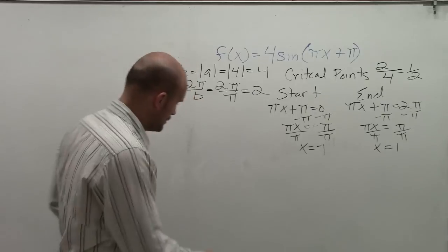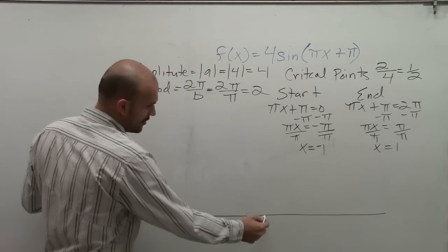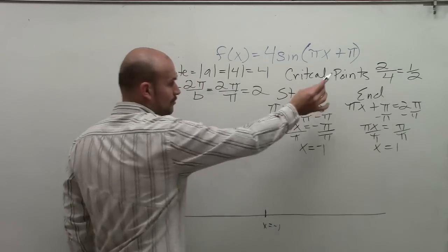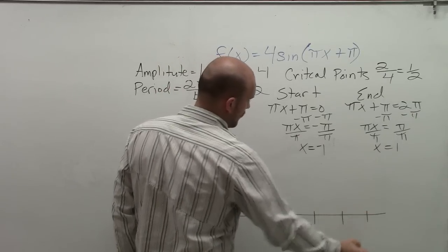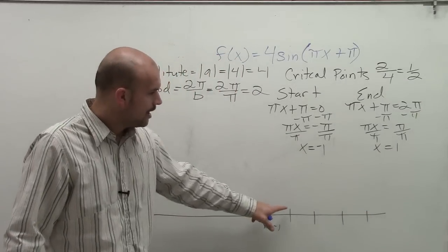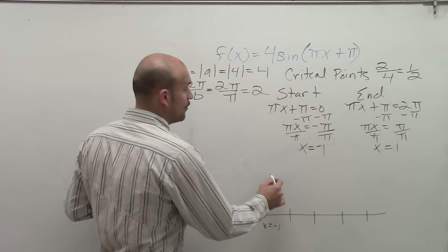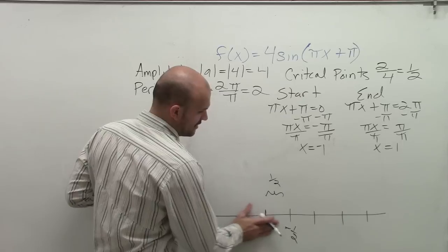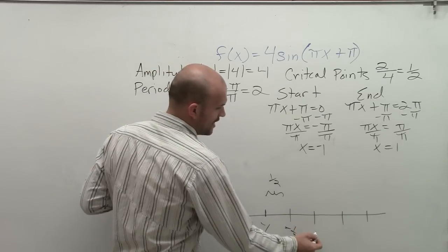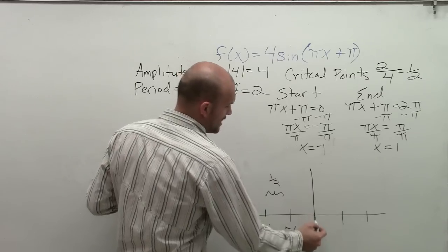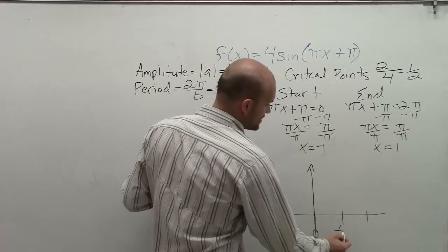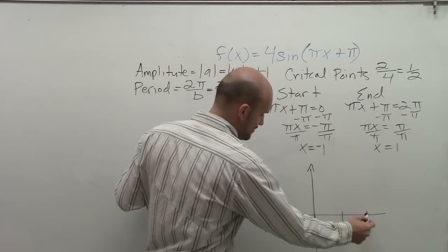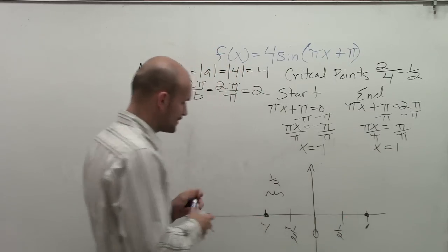Now I'm going to create my graph. My starting point is x equals negative 1, and I'm going to have four critical points. Remember, the distance between each critical point is one half. So starting at x equals negative 1, the next point is negative one half, then 0 which is our y-axis, then positive one half, and this last point is positive 1. That's my ending point for the first period.